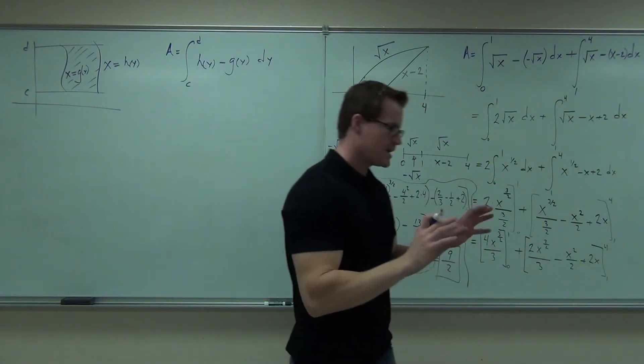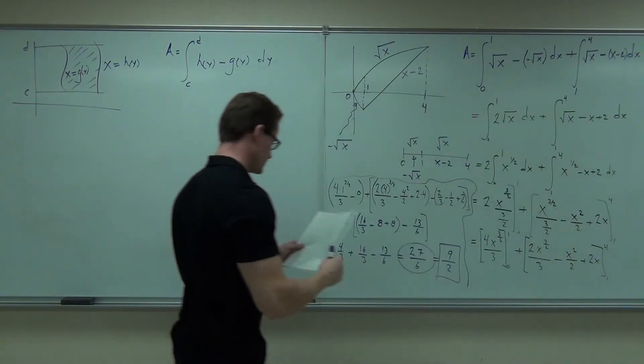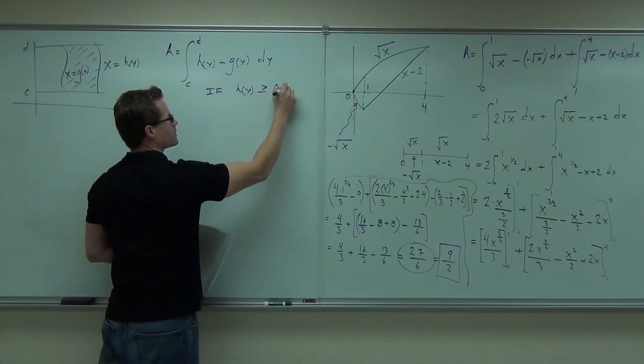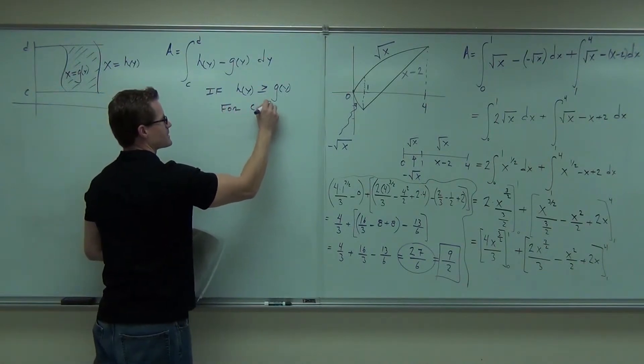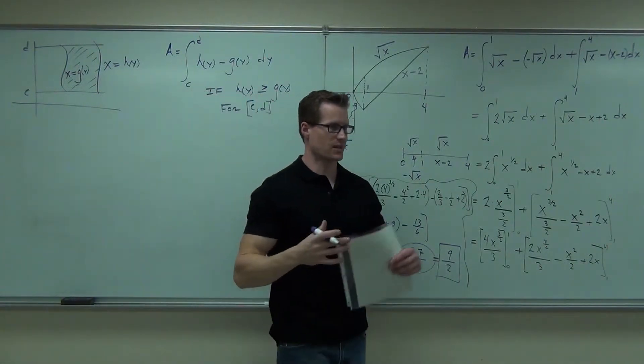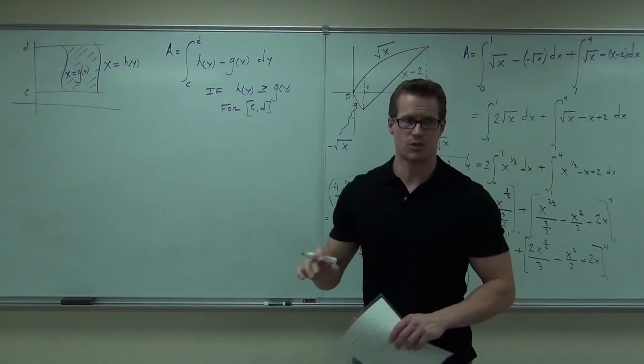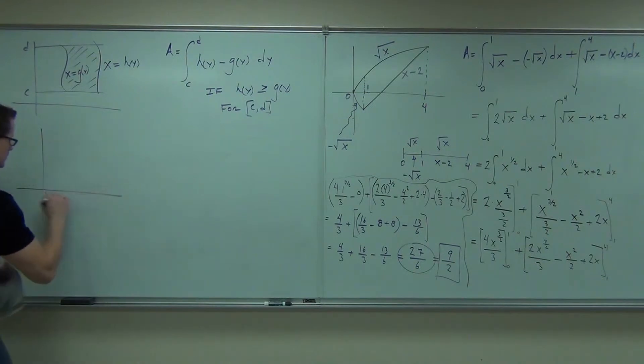So, basically, h of x is to the right. And this, of course, is if h of y is greater than or equal to g of y for all of c to d. Guys, this says the same thing I said for this type of thing. It just says in terms of y instead of terms of x. Let's go ahead and let's do this setup on our problem over here. I will show you. It will be basically very easy. Same one.